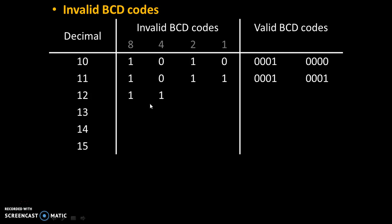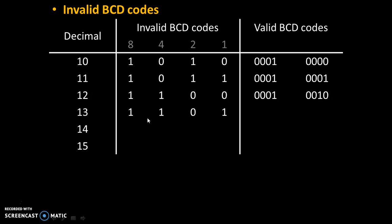12 can be written as 1100 in binary, but this is an invalid BCD code. The valid BCD code for 12 is the code for 1 (0001) followed by the code for 2 (0010). For 13, the binary value is invalid BCD, but the valid BCD code is the code for 1 followed by the code for 3 (0011).